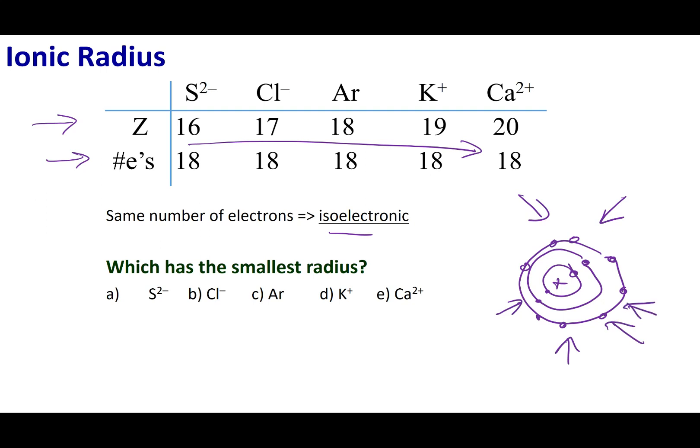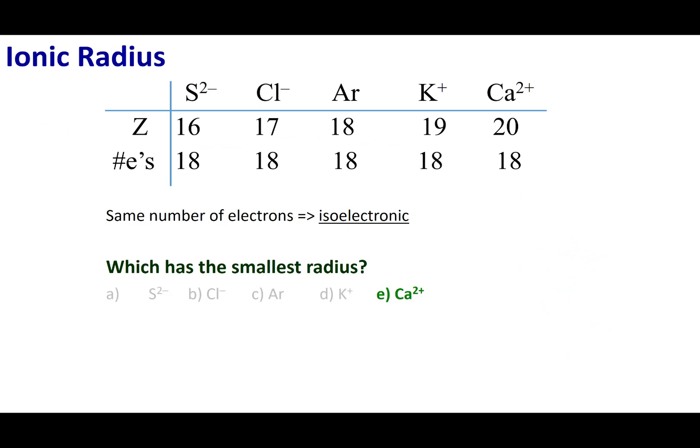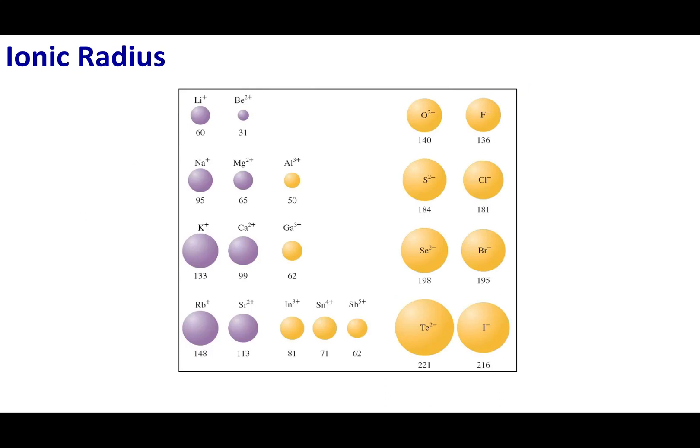That means it's going to get tighter and tighter. In this case, the one with the highest charge is going to pull the most in and thus become the smallest ion.